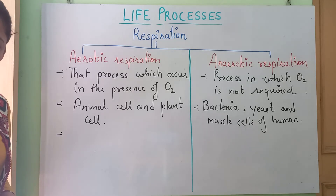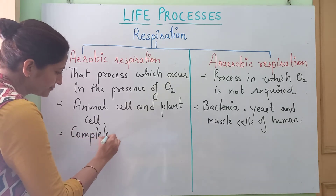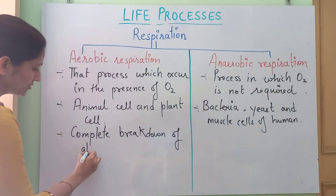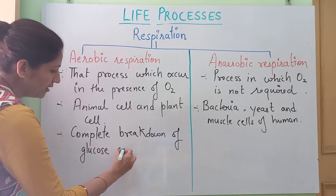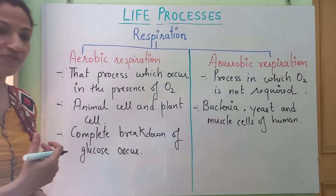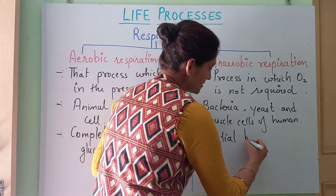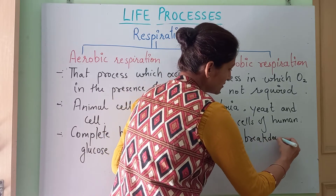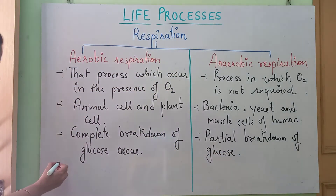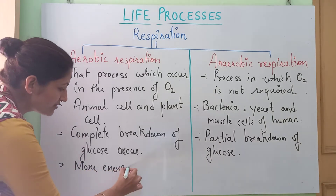Aerobic respiration is a multi-step process, and in this the complete breakdown of glucose takes place, which results in the production of more energy. In anaerobic respiration, there is partial or incomplete breakdown of glucose. So as I have told you, the complete breakdown means more energy is released in the aerobic process.